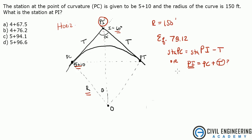And the equation for that is going to be equation 78.4. And we can find out that T equals the radius times the tangent of that I angle, that interior angle, 60 degrees, divided by 2.